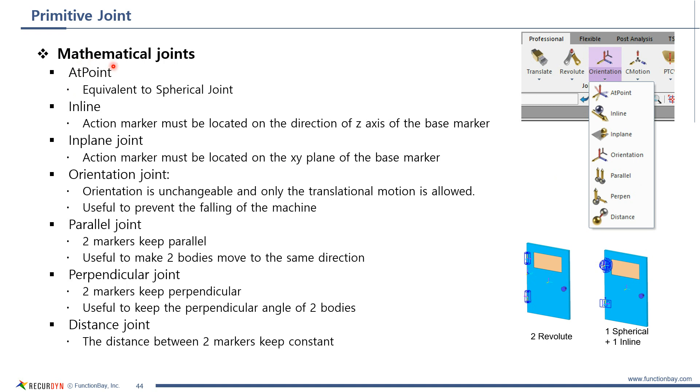At point is almost the same as spherical joint. And line joint is that its action marker must be located on the direction of z-axis of the base marker. In plane joint, the action marker must be located on the x-y plane of the base marker. Orientation joint, the orientation is not changeable. And only the translational motion is allowed. This is useful when preventing the falling of the machine. Parallel joint makes two markers keep parallel. Perpendicular joint makes two markers keep perpendicular. Distance joint keeps the distance between two markers constant.